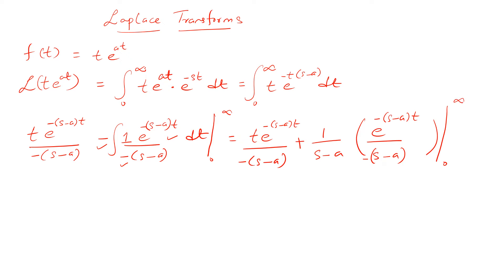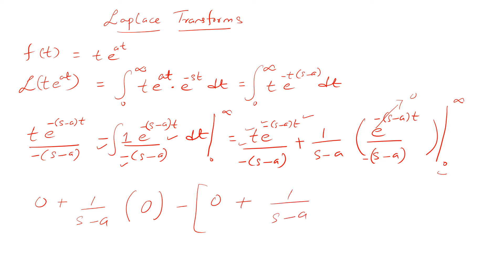Now we apply the limits. When we apply infinity, the exponential term goes to 0, so that term vanishes. For the lower limit, when we put t = 0, the t·e^(-(s-a)t) term becomes 0. Then applying t = 0 to the remaining integral gives e^0 = 1, so we get 1/(s-a) multiplied by 1/(s-a), because e^0 = 1.